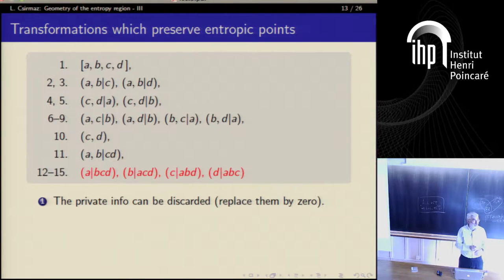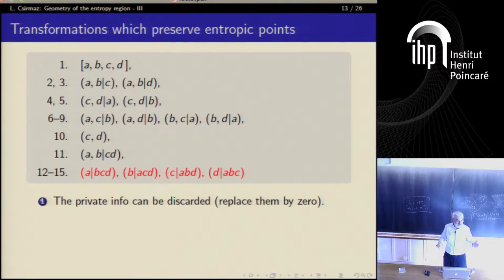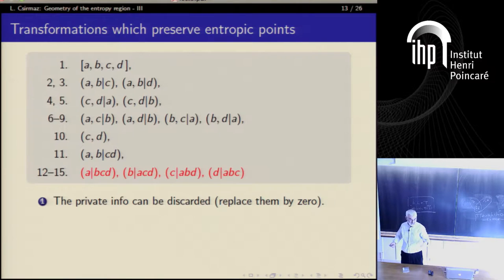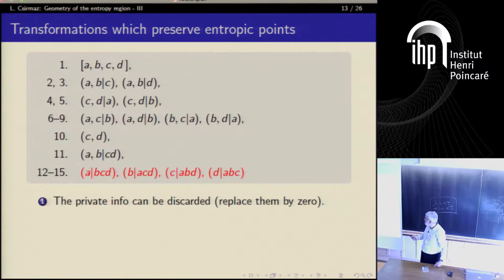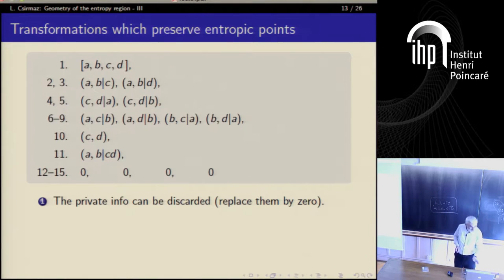The first step: private information simply goes away — it does not count. This 15-dimensional cone is nothing else but an 11-dimensional cone times a 4-dimensional orthant. The last four values can be replaced by any non-negative value and you still get an almost-entropy distribution, so you can just set them to zero.